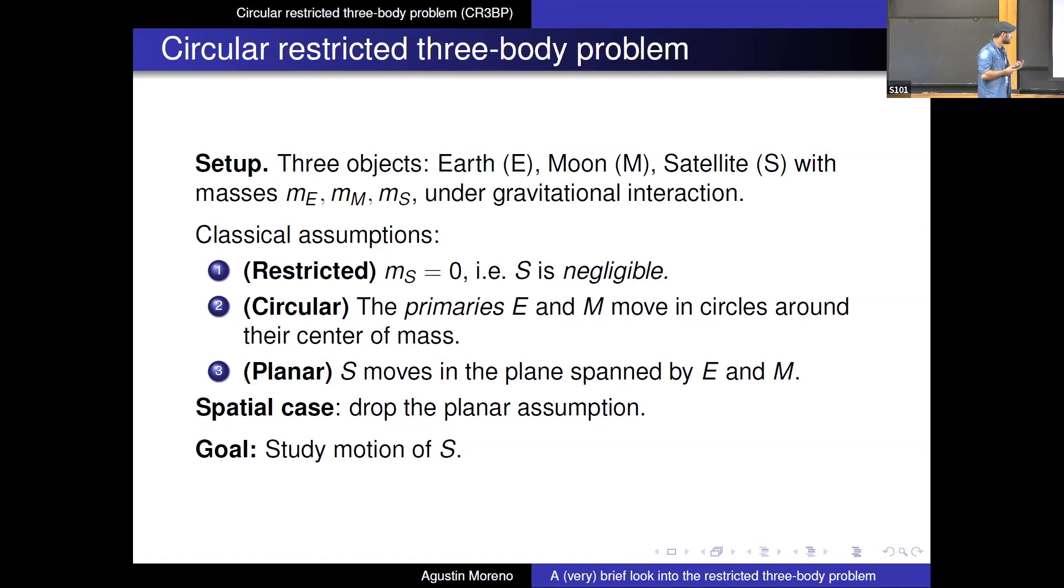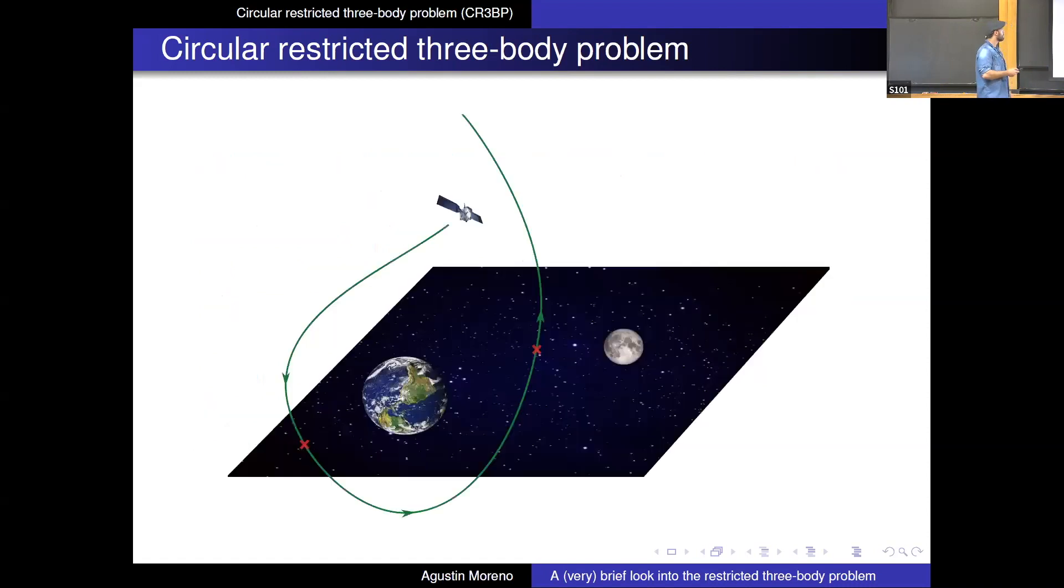So the goal for us is to study the motion of the satellite and the influence of the two products in a broadly understood sense. So this is a picture for you to remember. So there's the Earth and the Moon and the satellite which is doing whatever it is.